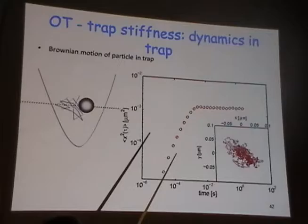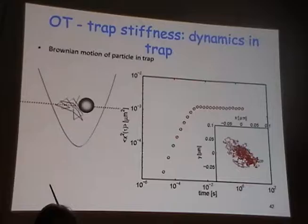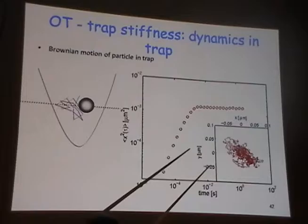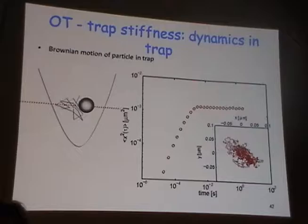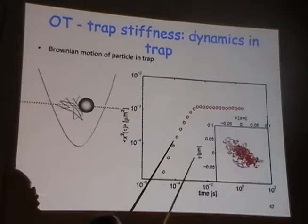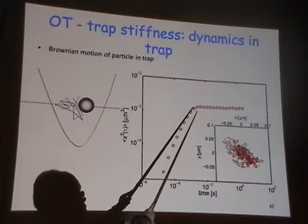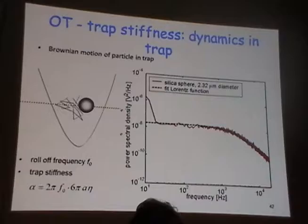We can look at the dynamics of the trap the whole time we trap the particle, and there are several ways of doing this experimentally. I can have a very fast camera — which are available now — and track the movement of the particle in the camera. Or we can have another type of detector, like a quadrant detector, and look at the displacements of the particle in time.